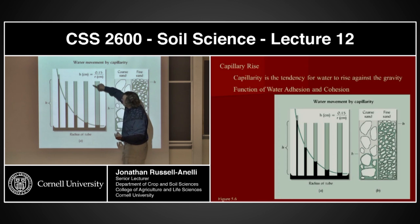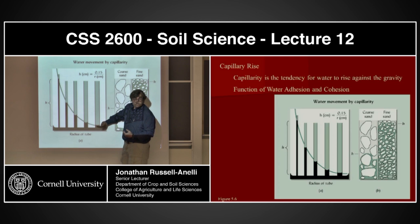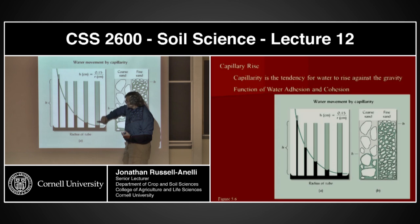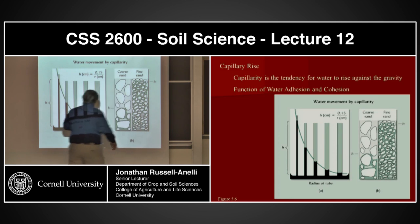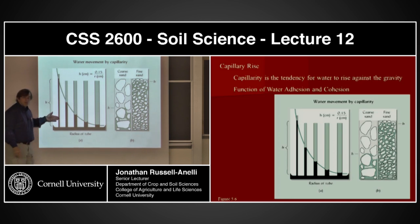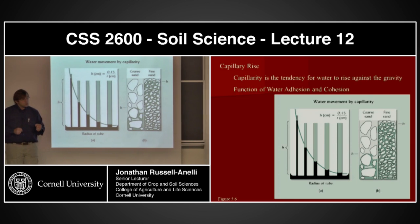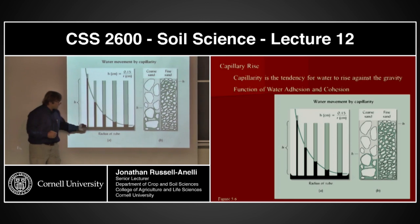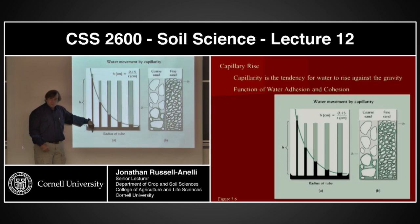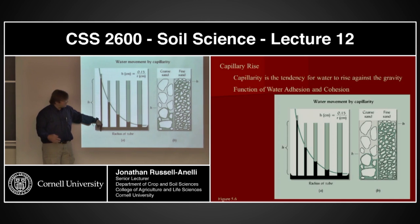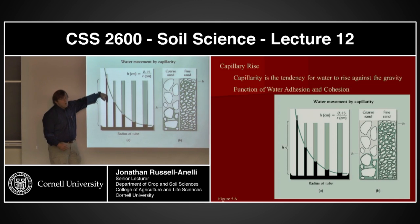The question is, is there enough matrix potential up here to pull water all the way up? When I have large pipes, I don't have enough matrix potential. But as those pipes get smaller, the matrix potential becomes more negative. And it can counteract the gravitational pull and basically use capillary action or adhesion-cohesion properties of water to move that water column up.